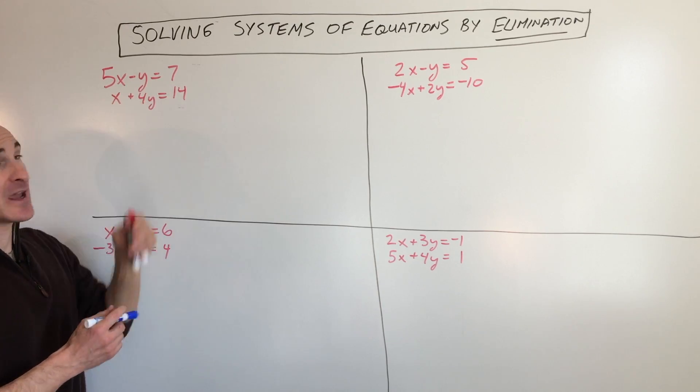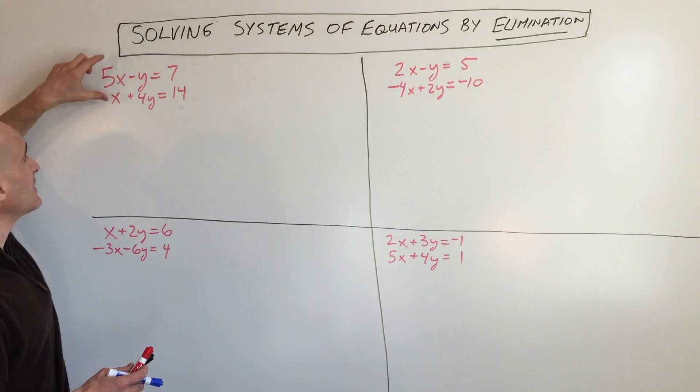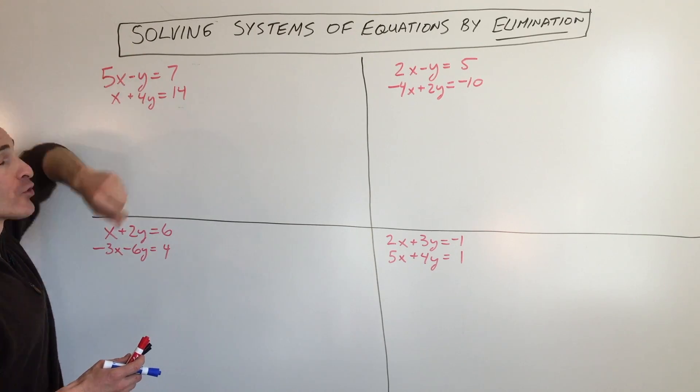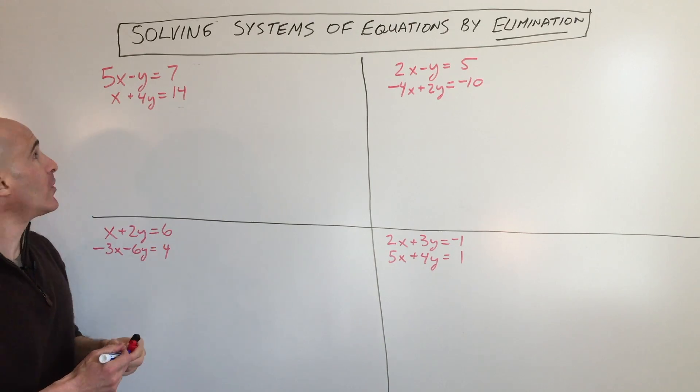What we're going to do is eliminate, we're trying to add the two equations together to eliminate either the x variable or the y variables, so we can get it down to one equation with one variable.